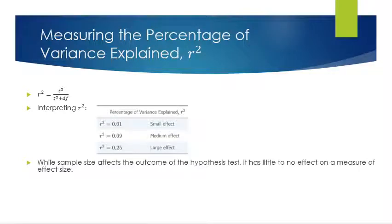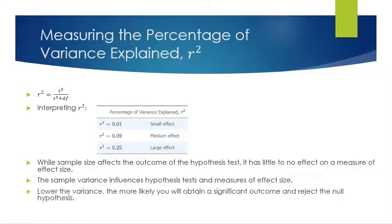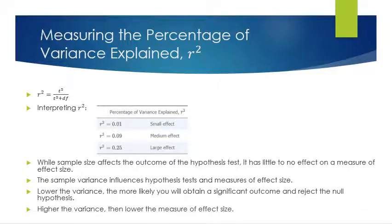While sample size affects the outcome of a hypothesis test, it has little or no effect on effect size. However, sample variance does influence both hypothesis tests and all measures of effect size. The lower the variance, the more likely you are to obtain a significant outcome and reject the null hypothesis. The higher the variance, the lower the measure of effect size.